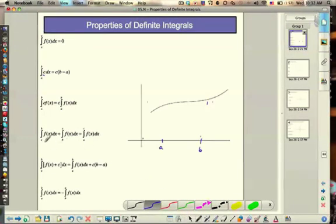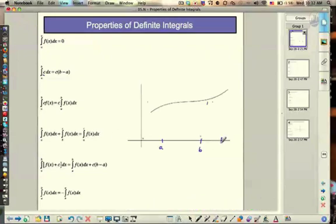And then this one says the integral from A to B plus the integral from B to C is the same as the integral from A to C. So if we stick out a C here, we have the integral from A to B and then B to C. We just add the areas and we'll get the integral from A to C. So we can split them up as well.